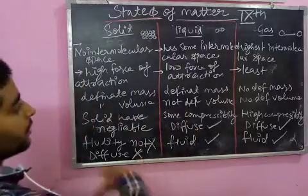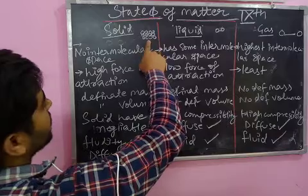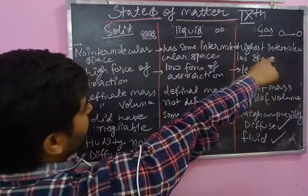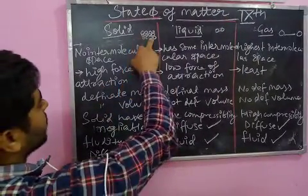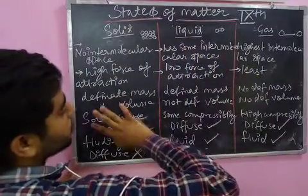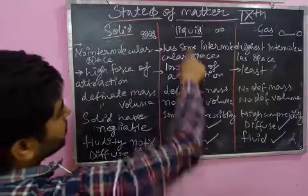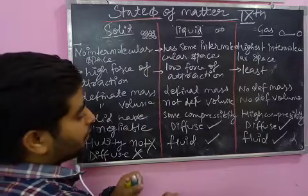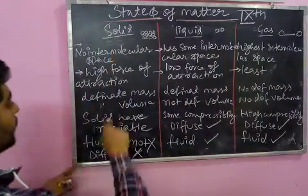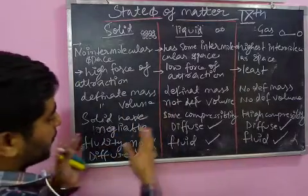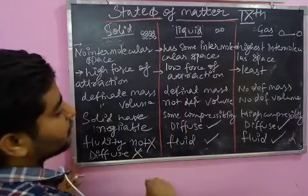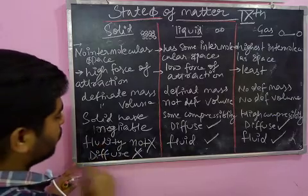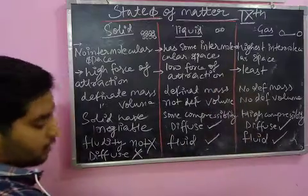To summarize: inter-particle distances are negligible in solid, a little more in liquid, and very high in gas. Inter-particle force is highest in solid, lower in liquid, and least in gas. Mass is definite for solid and liquid, but not for gas. Volume is definite for solid, not definite for liquid or gas. Solids have negligible compressibility, liquids have a little, gases have very high compressibility. Solids are not fluid and not diffusible; liquids and gases are fluid and diffusible.